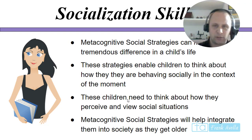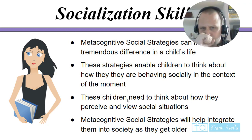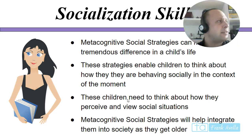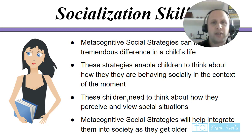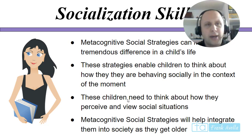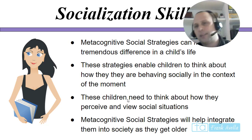Metacognitive social strategies can make a tremendous difference in a child's life. These strategies enable children to think about how they are behaving socially in the context of the moment. Metacognition means basically thinking about thinking — thinking about your strategy, like thinking about your chess strategy for a chess game. So metacognitive social strategies help integrate ASD children into society.